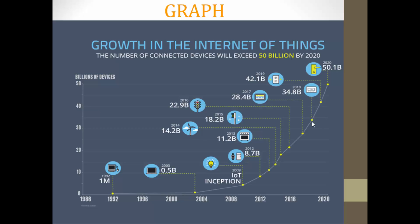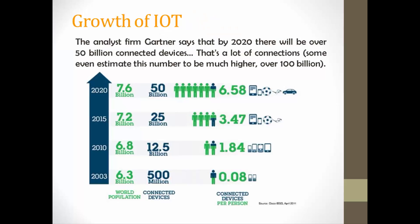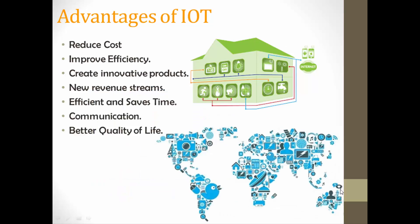You can see the graph showing the growth of Internet of Things — year by year, how many devices are being added and what the development looks like. By 2020, we can expect around 50.1 billion IoT devices. Analyst firm Gartner says by 2020 there will be over 50 billion connected devices for IoT, and it could even be over 100 billion.